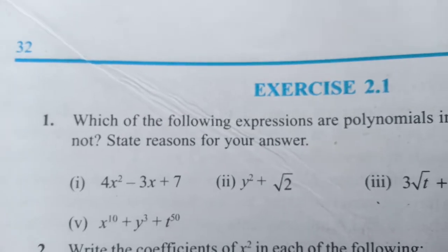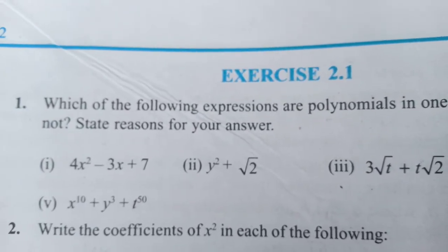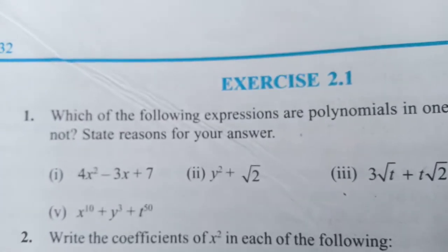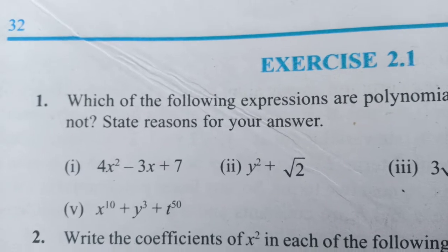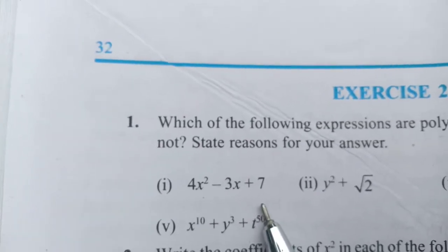We are asking which are the polynomials or not, and which are the polynomials with one variable or two variables. We will consider the first one: 4x² - 3x + 7.